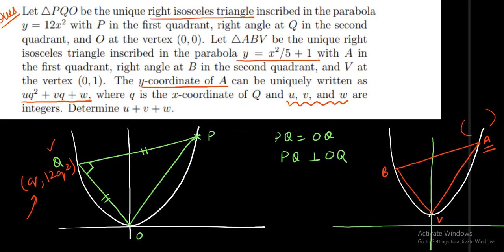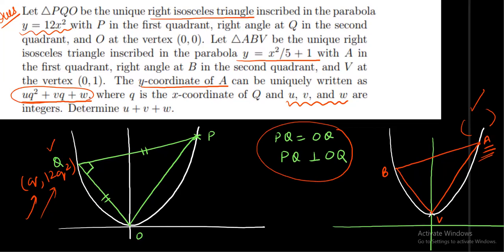One way of solving the question is first getting the value of q from the first parabola, then using a similar approach to get the coordinates of vertex A, and finally comparing the y-coordinate of A with the x-coordinate of Q. However, this is a very long process with a lot of calculation, so I'm going to use the help of translation and scaling to reduce the calculation part.